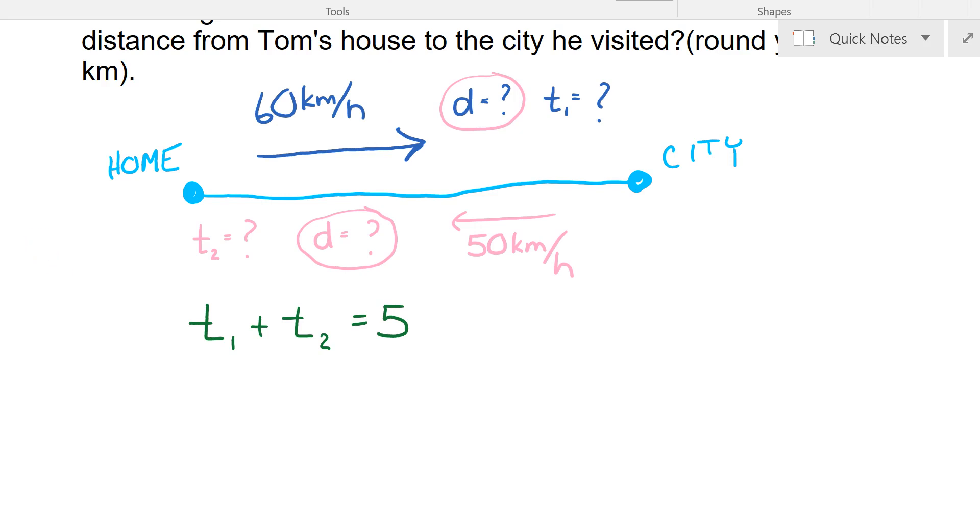So we know that speed is equal to distance over time, so time is equal to distance over speed. What we can do now is I can take t1, so t1 is going to be my distance which is d over my speed which is 60, plus t2 is going to be my distance which is d over my speed which is 50, and that's equal to 5.